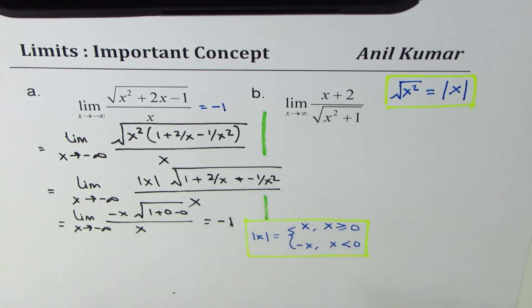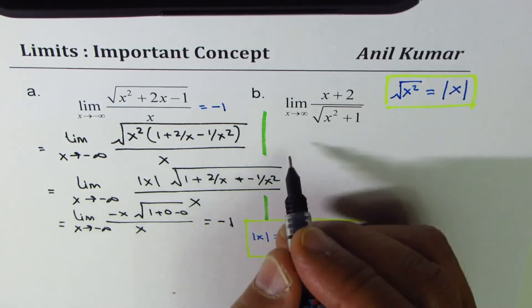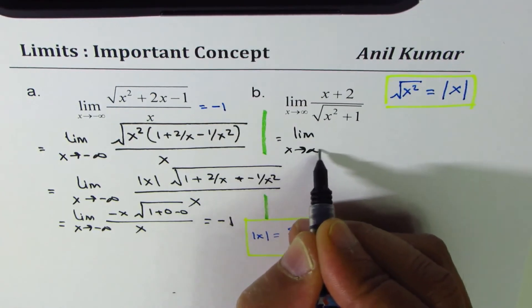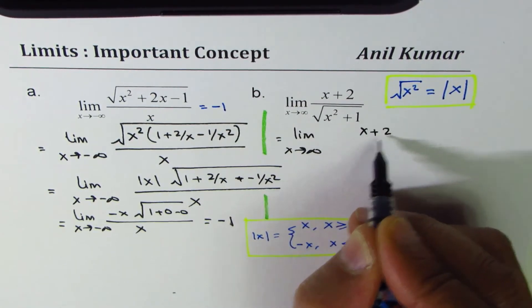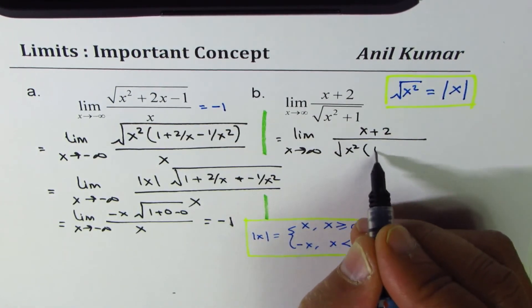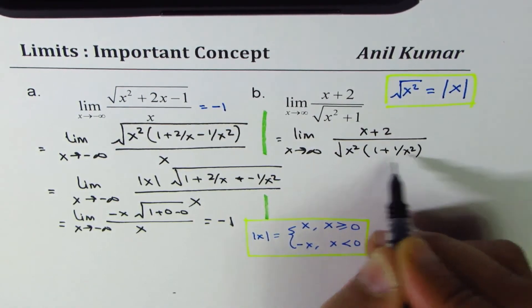I'd like you to pause the video and answer the next one. We'll follow the same technique. We write this as limit x approaches infinity. Numerator is x plus 2. Denominator will take x squared common. So we get 1 plus 1 over x squared.